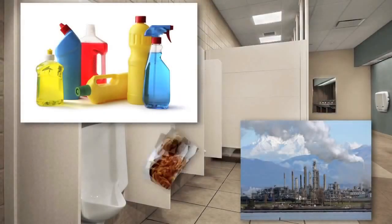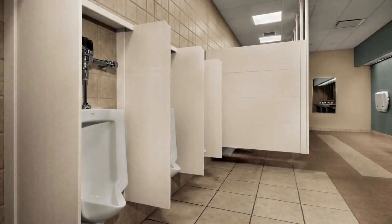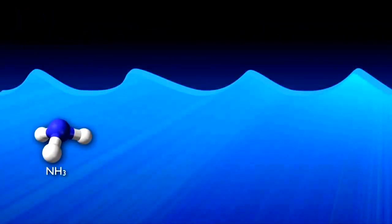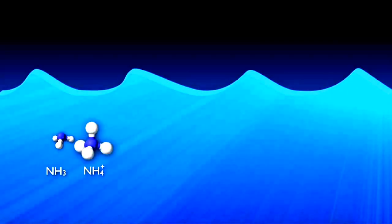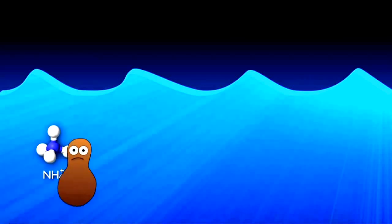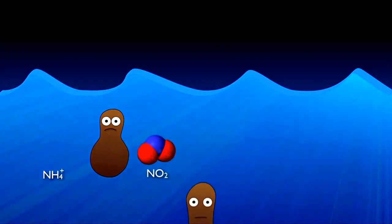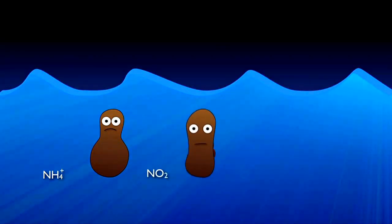In simplistic terms, nitrogen in various forms is flushed, rinsed, or otherwise introduced into the sewer system. Almost all organic nitrogen — urea, for example — is immediately hydrolyzed into ammonia. In water, gaseous ammonia (NH3) is almost entirely converted to ionized ammonia, or ammonium (NH4+). Specialized autotrophic bacteria, or nitrifiers, convert the ammonium to nitrite (NO2) and then to nitrate (NO3) through various biological processes.